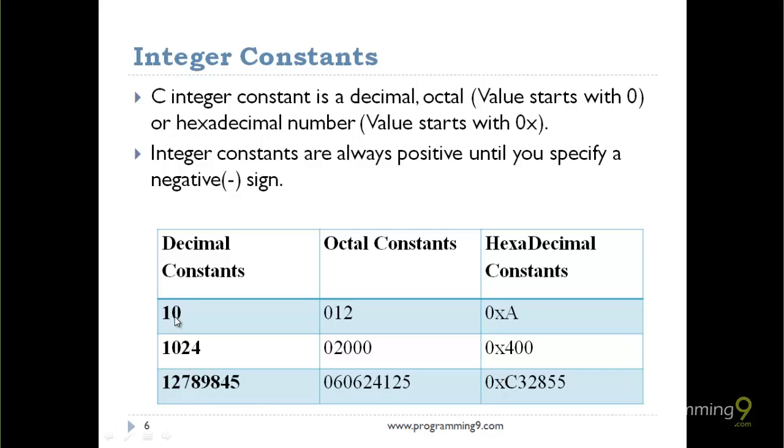Decimal constants include 10, 1024, 12789845, ranging from short to long. Octal constants equivalent to decimal 10 would be 012. In hexadecimal, it's 0xA. Similarly, 1024 in decimal equals 02000 in octal and 0x400 in hexadecimal.